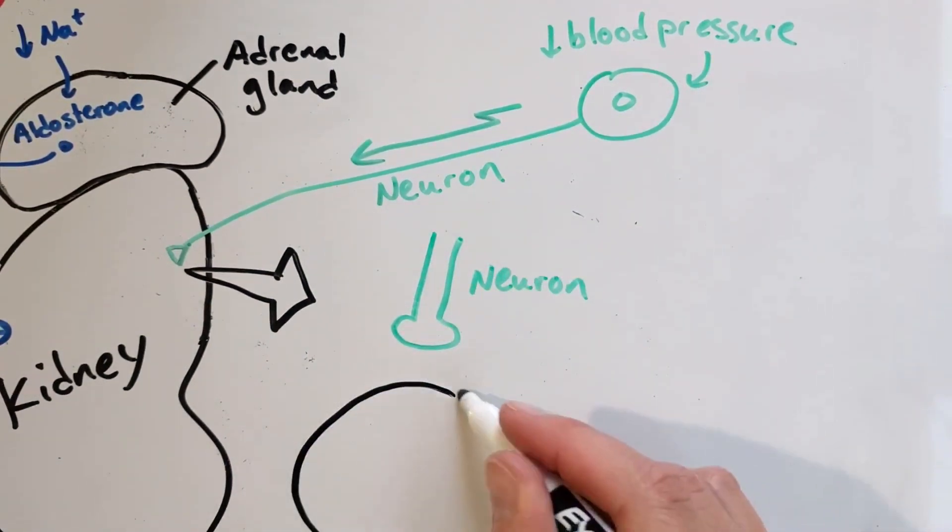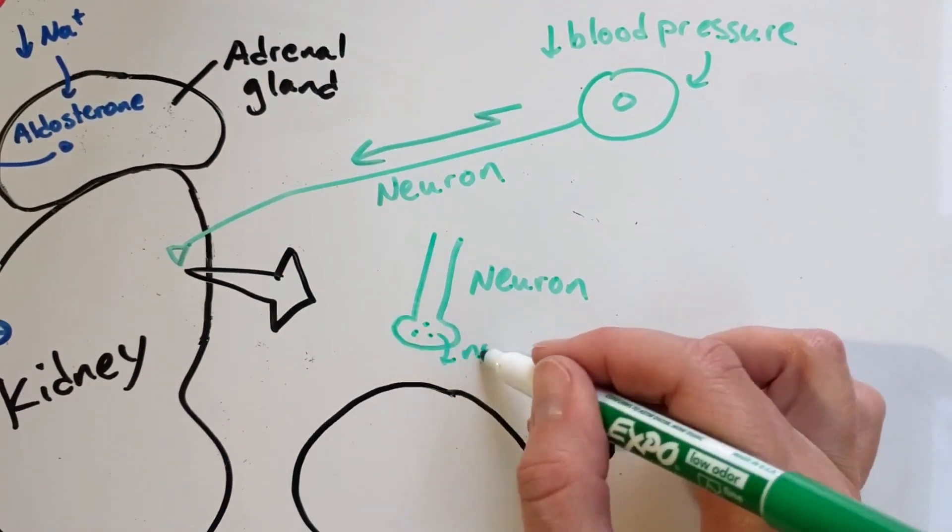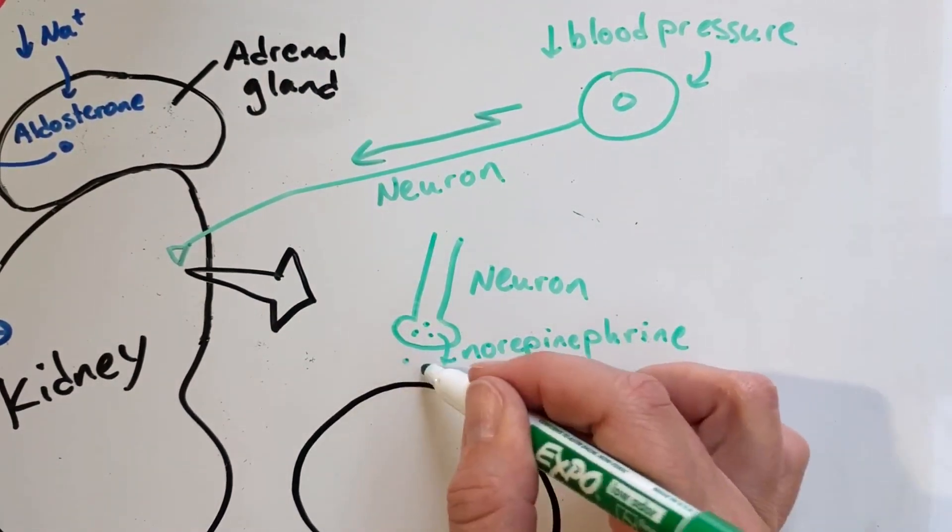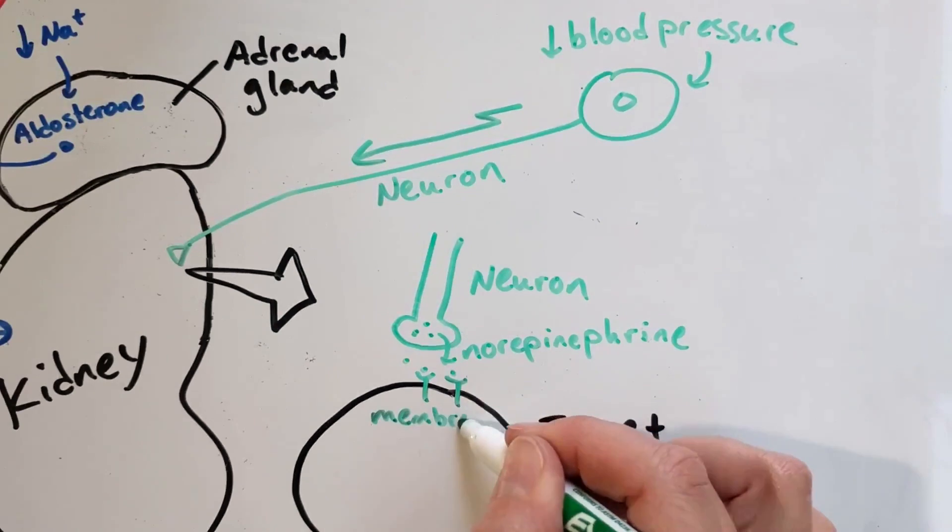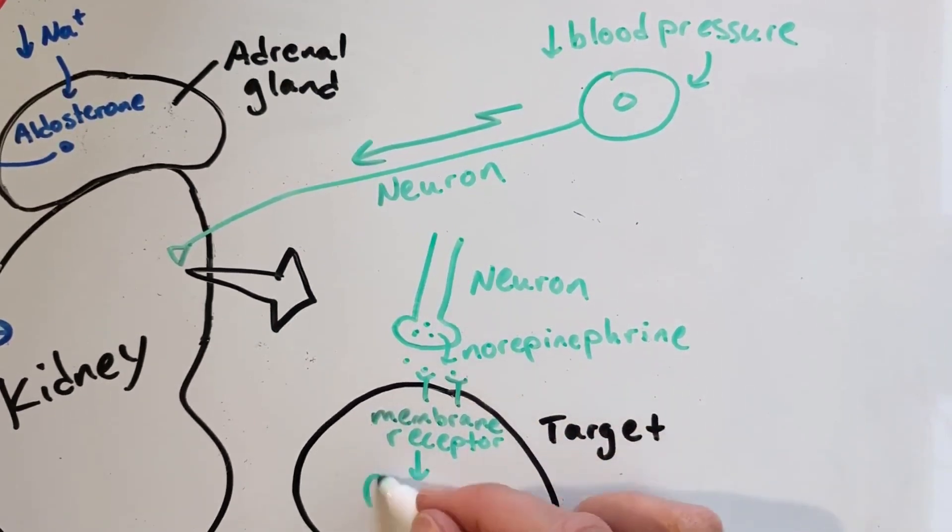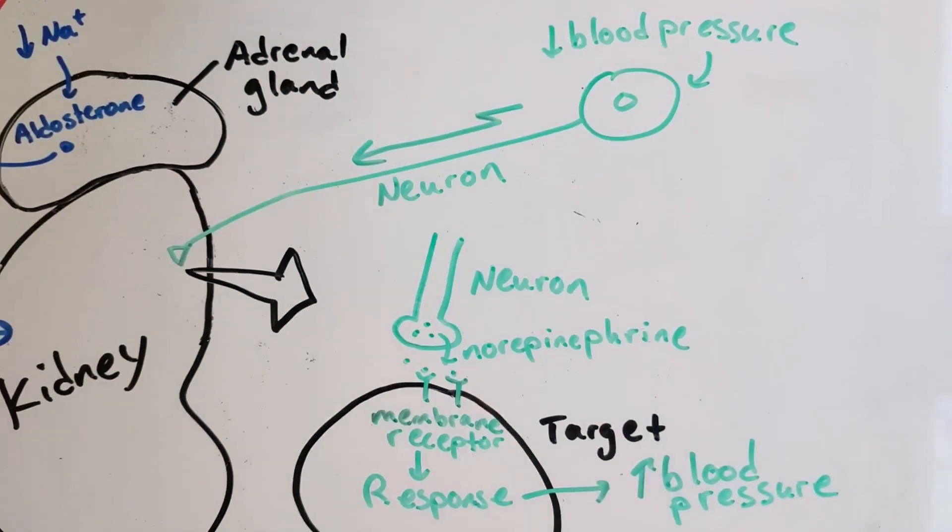The neurotransmitter in this case is called norepinephrine, which is lipophobic. It is released from the neuron by exocytosis and binds receptors on the membrane of the kidney cells. This initiates a response that helps to increase blood pressure.